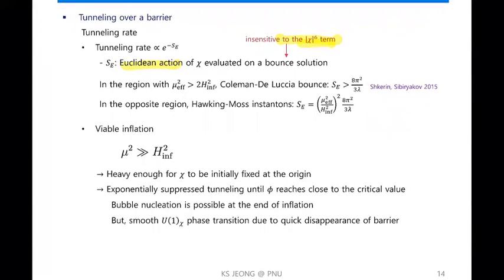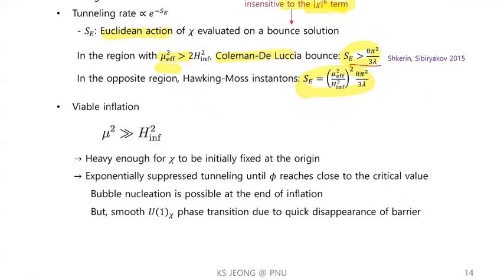In that case there are known results: if the effective mass squared is larger than the Hubble scale squared, the Coleman-de Luccia bounce is important and the nucleation action is very large, so the tunneling rate is exponentially suppressed. In the opposite region where the effective mass squared is smaller than the Hubble scale, the Hawking-Moss instanton is more important and the Euclidean action is relatively small, so tunneling can occur. To avoid tunneling before the barrier disappears, we consider the case where the effective mass squared is large enough.